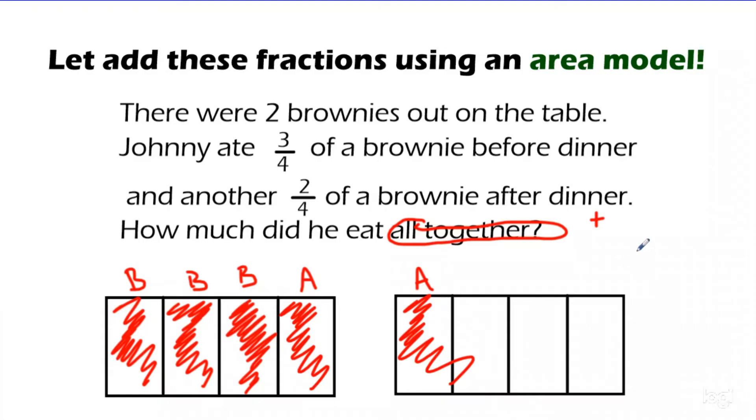So you can very clearly see that he ate 1, 2, 3, 4, 5. And then my denominator didn't change. 5 fourths. Or you could have written this as a mixed number. He ate 1 whole brownie and then 1 fourth of another one. My answer for this then is 5 fourths or 1 and 1 fourth. They both represent the same amount of brownie. That's how we add with the area model. We draw the area model. We use our denominator to split it into the equal pieces. And then we just shade them in and add them together.